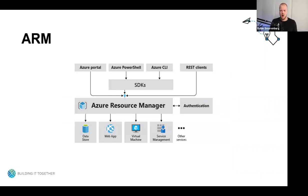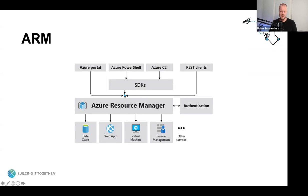Azure Resource Manager is the service for managing and deploying resources in your Azure environment. ARM enables you to manage your resources using available tools like the Azure portal, Azure PowerShell, Azure CLI, or other REST clients. The Azure portal and Azure CLI communicate with Azure Resource Manager through a software development kit (SDK), and they all talk to the same API or endpoint. Even though this is distributed across the whole Azure environment, it gives you consistent results using different tools — all tools have the same capabilities.